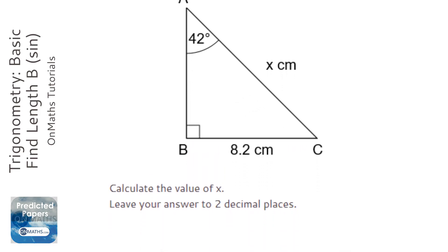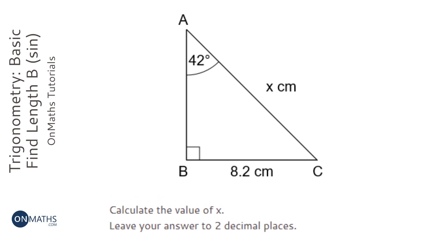Okay, in this question we're asked to find a length in a right-angled triangle, and we're given a length and an angle. So that means it's going to be a trigonometry question.